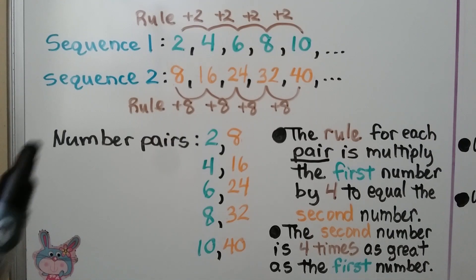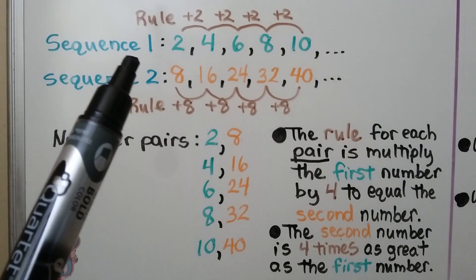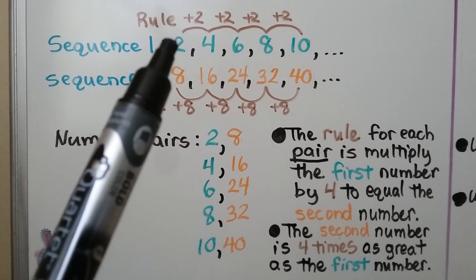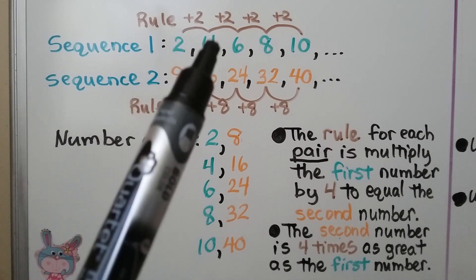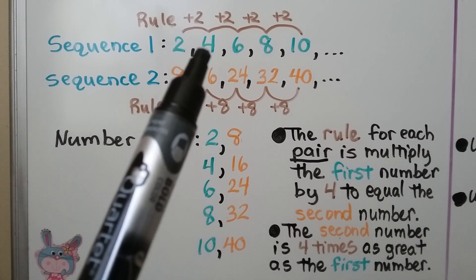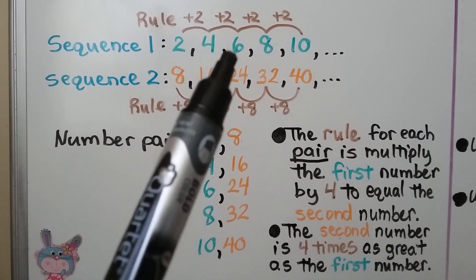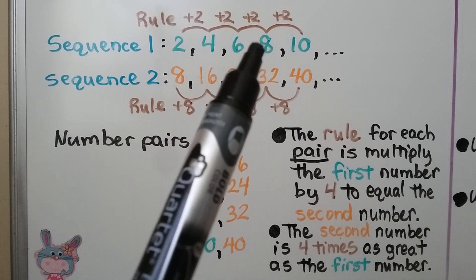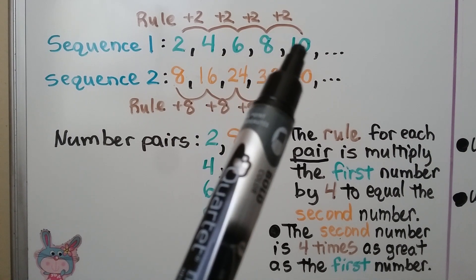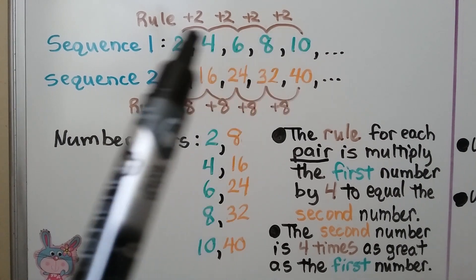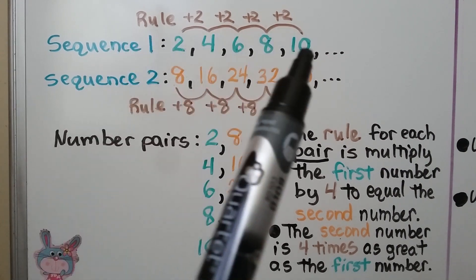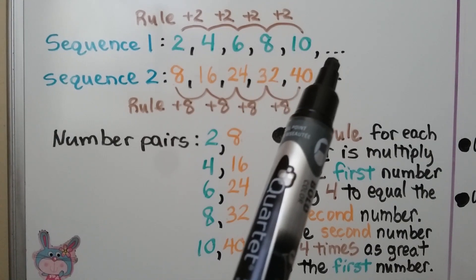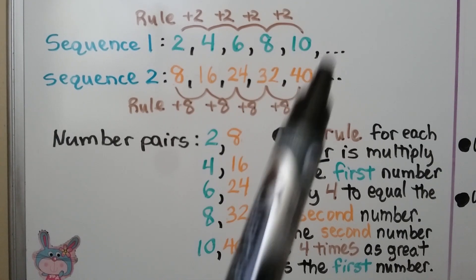The rule for sequence 1 is add 2. We go from 2 to 4 — we added 2. We add 2 more to get 6, then 8, then 10. So the rule for this sequence is to add 2, and we know the next number would be 12.